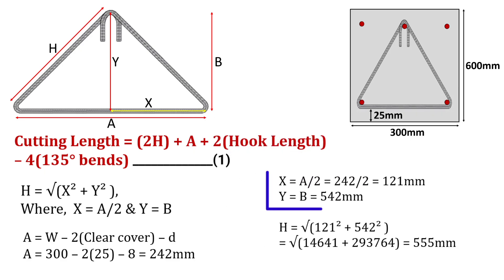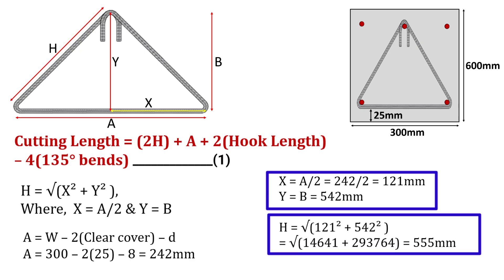Again, X will be equal to A by 2 which is 121 mm and Y equal to B which is already calculated as 542 mm. By substituting the values of X and Y, H will be equal to 555 mm.